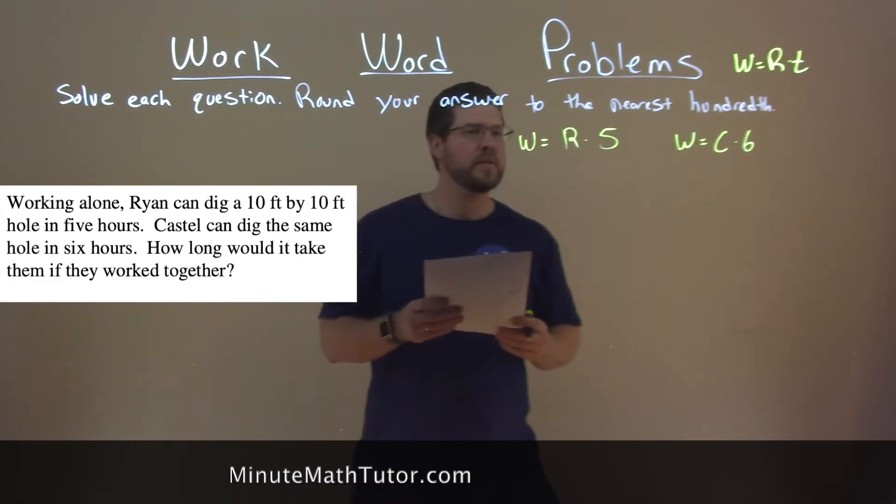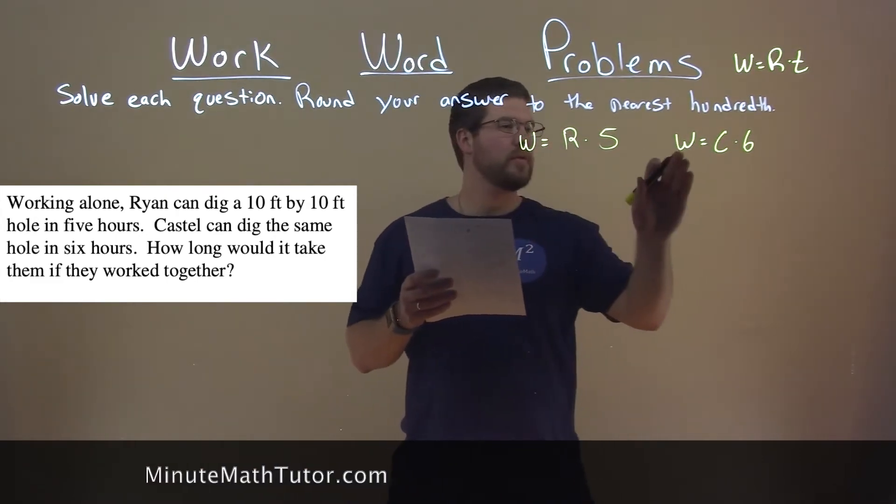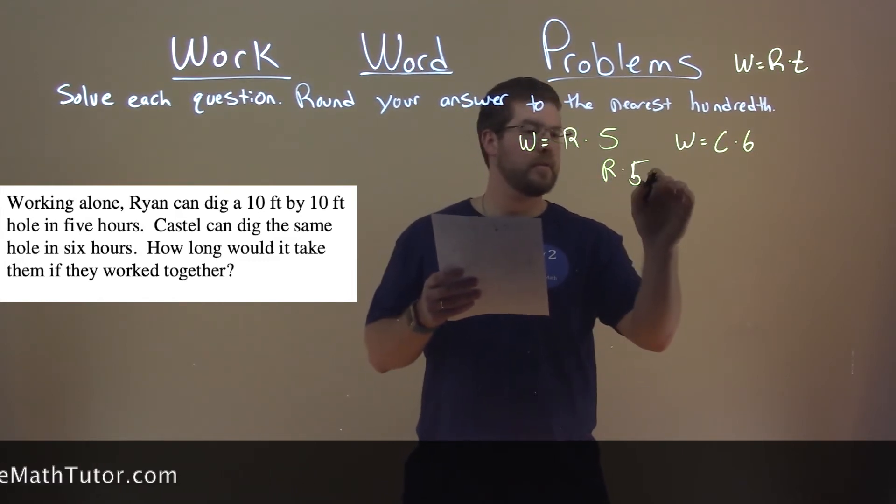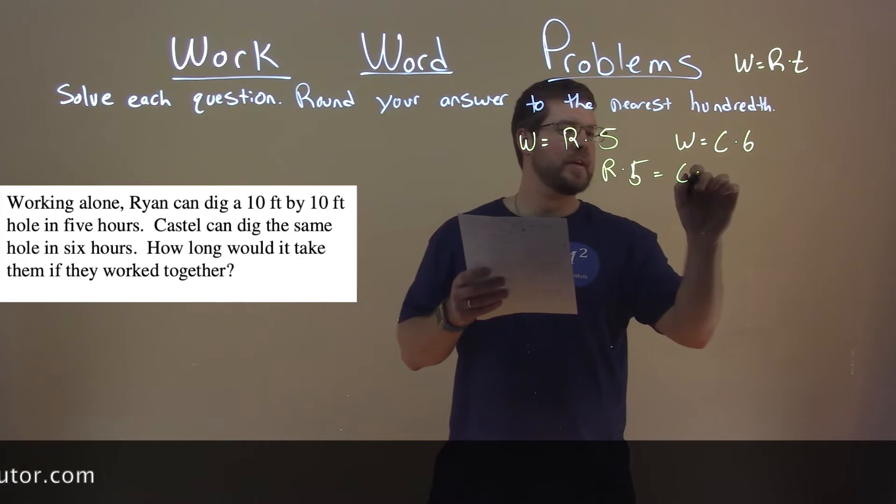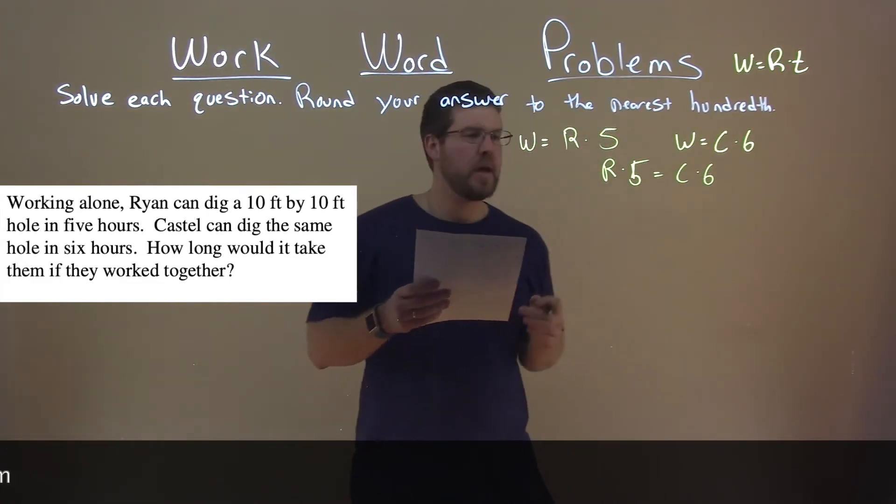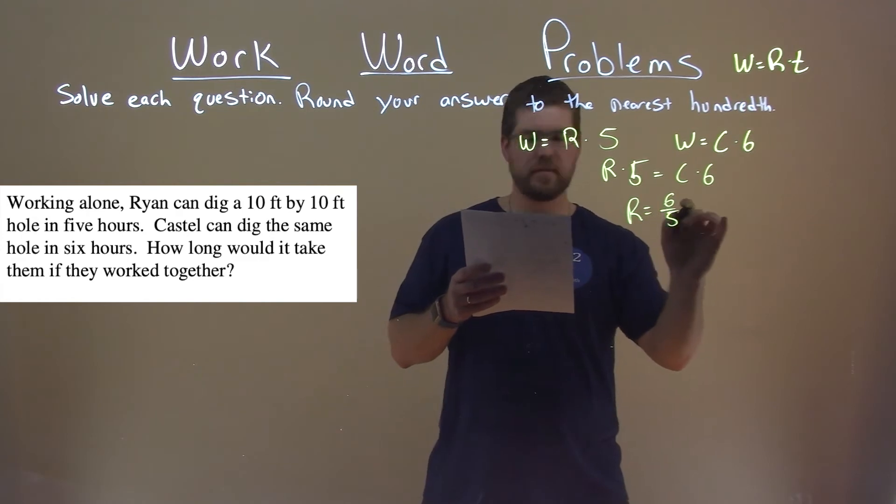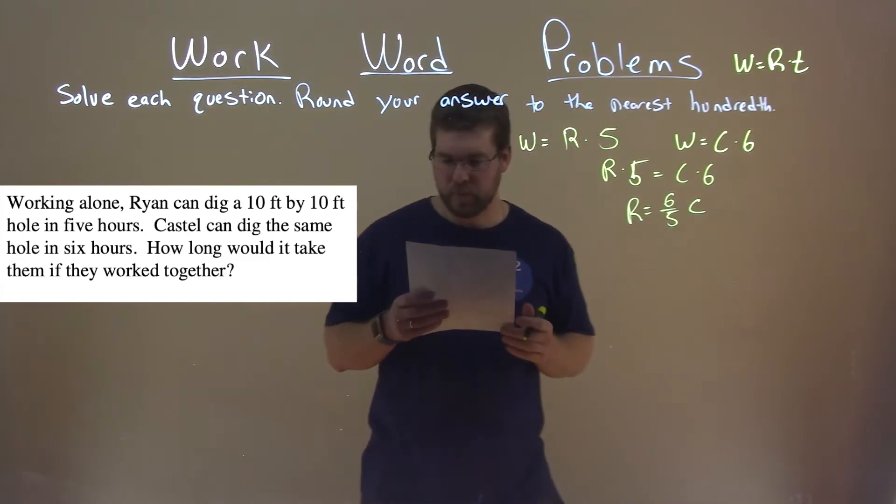So what we're going to do here is they're both W, so we can set them equal to each other. R times five equals C times six. And then from there, R by itself is six-fifths of C.